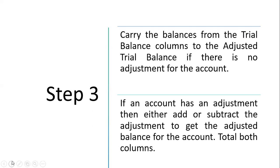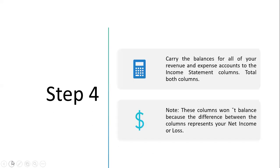When it comes to adding or subtracting: if the trial balance amount and the adjustment amount are both in the same column — for example both debit, or both credit — you add the amounts together and transfer the total to the respective column of the adjusted trial balance. If they are in different columns — for example debit and credit, or credit and debit — you subtract the amounts and enter the result in the column that has the larger amount. That is step three.